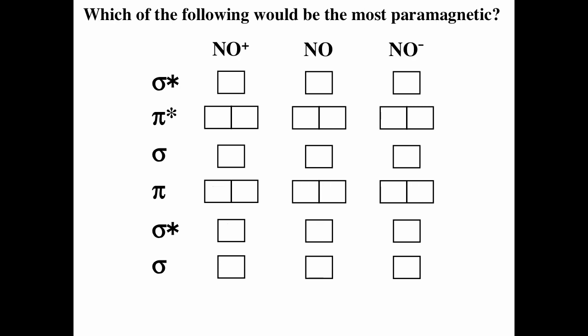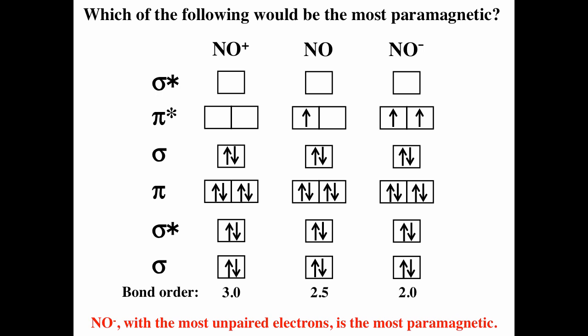For a question asking which species is most paramagnetic, count valence electrons and fill MO diagrams starting with the lowest energy orbital, maximum two electrons per orbital, applying Hund's rule for degenerate orbitals. One species has two unpaired electrons, making it the most paramagnetic. Another has one unpaired electron and is less paramagnetic. NO⁺ is diamagnetic because all electrons are paired.